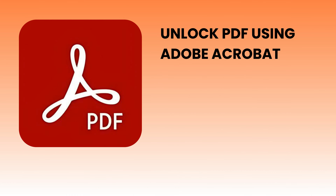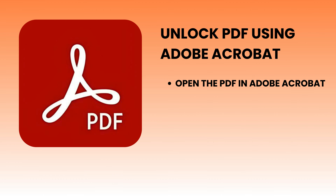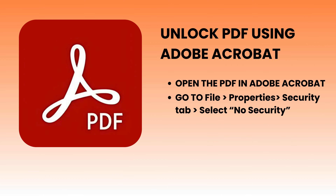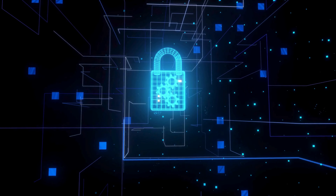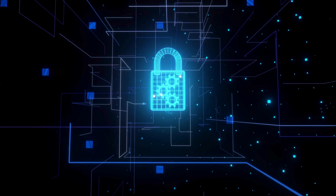Using Adobe Acrobat: if you have Adobe Acrobat Pro and know the password, this is the easiest method. Open your PDF in Adobe Acrobat, go to File > Properties, Security tab, and then change the security settings by selecting No Security. Save the file and the password protection will be removed. This method is quick and secure — perfect if you already have the software.